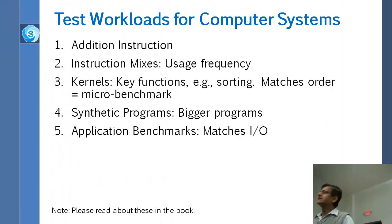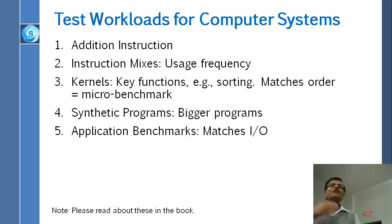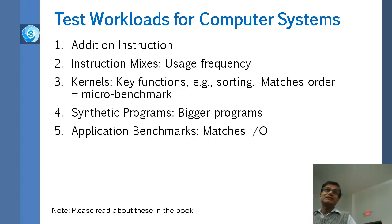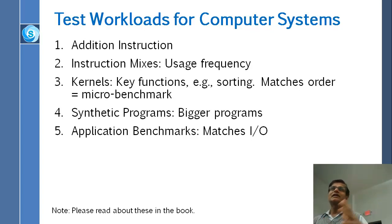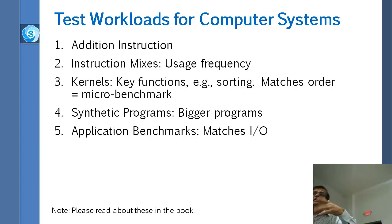The history of benchmarking: at the very beginning of computing, performance was measured by a single instruction — maybe 500 ADD instructions per second versus another computer doing 700. ADD and branch were essentially the only instructions. Then instruction sets became more complex, and more instructions were introduced.